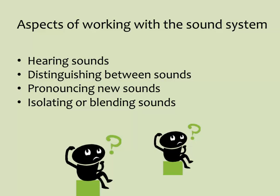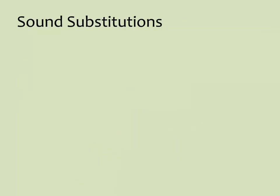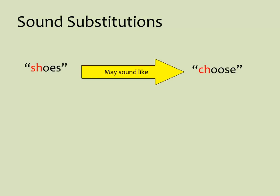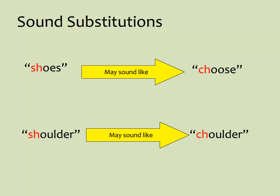Being aware of similarities and differences in the first and second languages helps teachers determine where to focus attention. For instance, when a sound does not exist in a particular language, speakers will substitute the best approximation in their language for an unfamiliar phoneme in another. For example, 'ch' is a sound in English but not in Spanish; the closest sound to 'ch' is 'sh.' That is why 'shoes' may sound like 'choose' or 'shoulder' may sound like 'shoulder.' This process of sound substitution is the basis of what we often call foreign accents — that is, the transfer of the sound system of one language onto another.